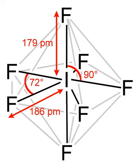IF7 is prepared by passing F2 through liquid IF5 at 90 degrees Celsius, then heating the vapors to 270 degrees Celsius.